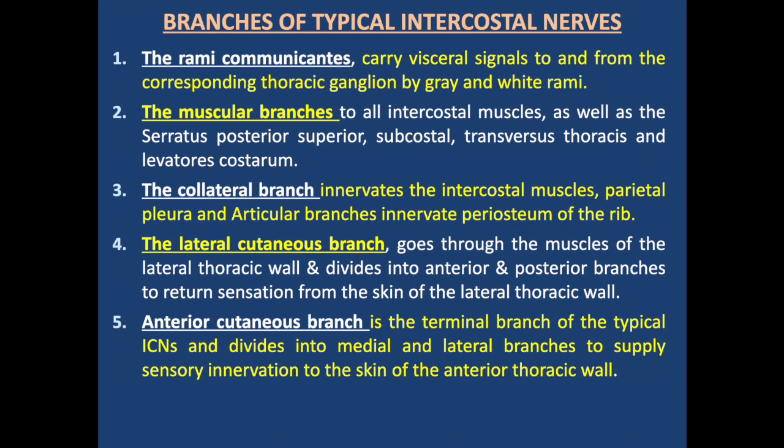There are five branches from a typical intercostal nerve: rami communicantes, muscular branches, collateral branches, lateral cutaneous branch, and anterior cutaneous branch. The rami communicantes carry visceral signals to and from the corresponding thoracic ganglion via gray and white rami, as part of the thoracolumbar outflow. Muscular branches supply all intercostal muscles, the subcostal muscle, transverse thoracic muscle, and levatores costarum. The collateral branch innervates intercostal muscles, parietal pleura, and periosteum. The lateral cutaneous branch divides into anterior and posterior branches for the lateral thoracic wall. The anterior cutaneous branch is the terminal branch, supplying the anterior thoracic wall skin.